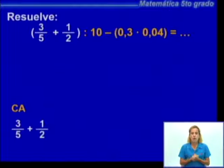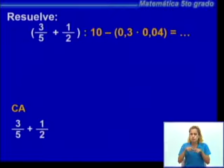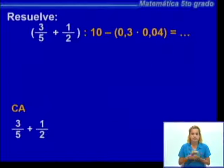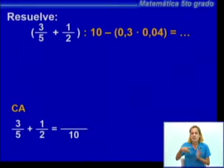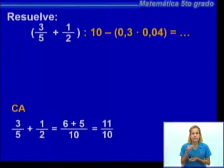Estamos ante una adición de fracciones con diferentes denominadores. Observamos los denominadores: 5 no es múltiplo de 2, ni 2 es múltiplo de 5, por lo tanto hay que buscar un común denominador. Un denominador común para 5 y 2 es 10. Podemos decir: 10 entre 5 es 2, por 3 es 6; 10 entre 2 es 5, por 1 es 5. 6 más 5 es 11, sobre el denominador común 10. Resultado: 11/10, que se mantiene como 11 sobre 10.